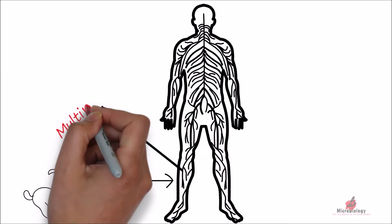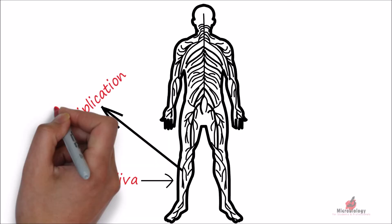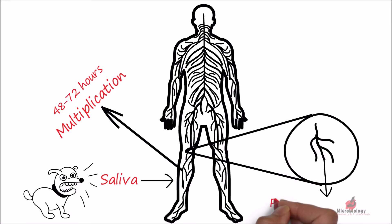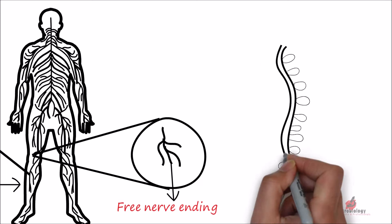The virus multiplies in the muscle cells at the site of entry for about 48 to 72 hours. It penetrates the free nerve endings and travels in the axoplasm towards the spinal cord and to the brain.